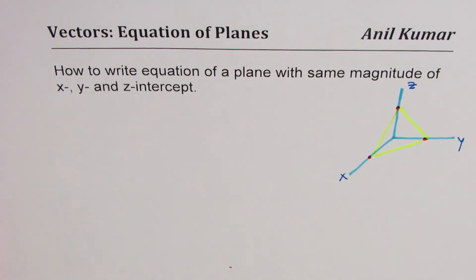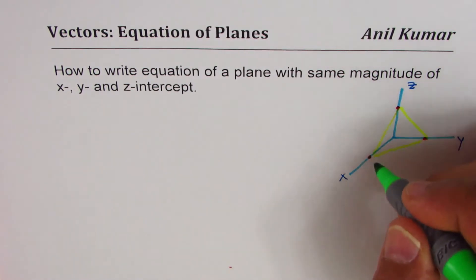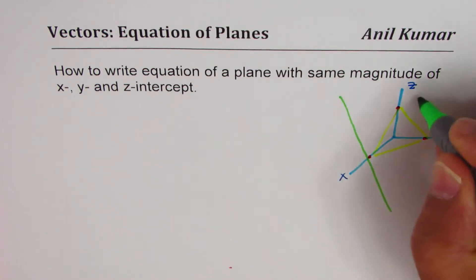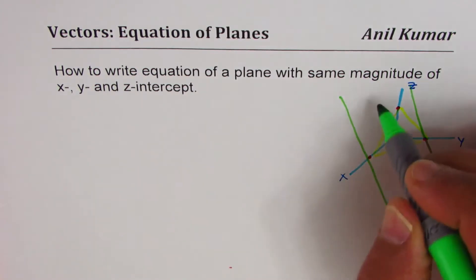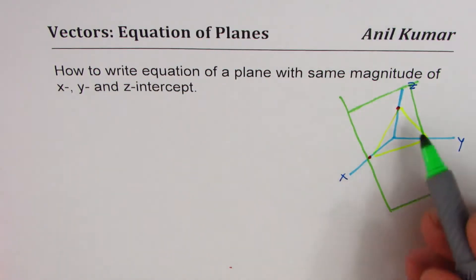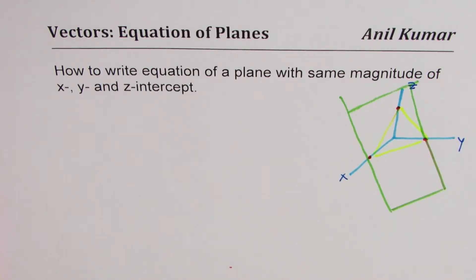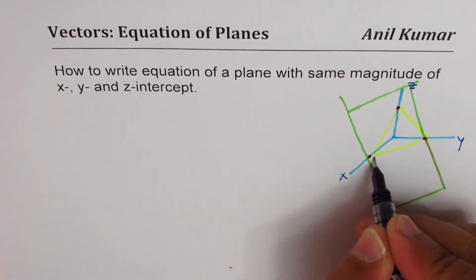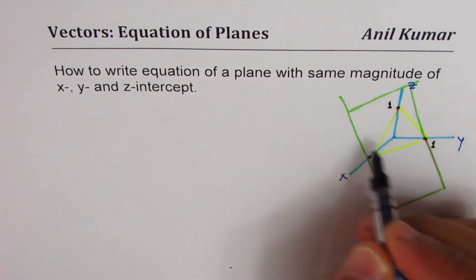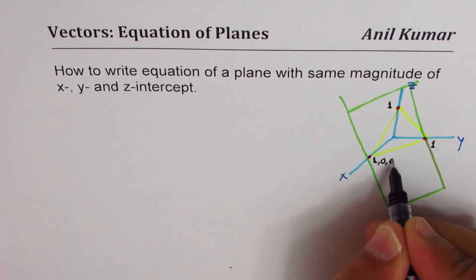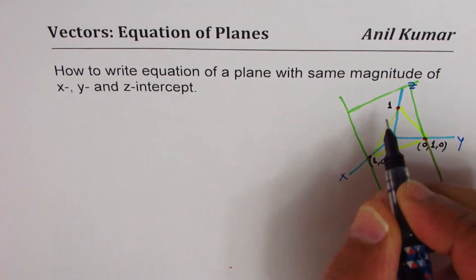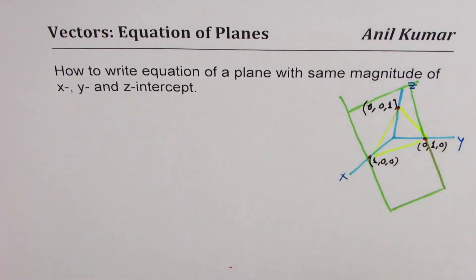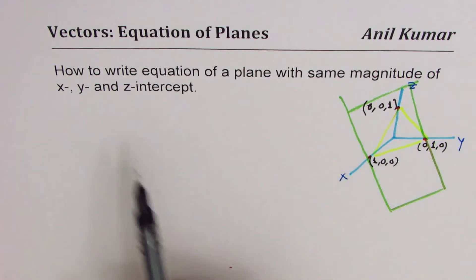This plane can be extended in all directions. These are the three points on the plane. For simplicity we are taking these points one unit away, so when I write 'one' it really means (1, 0, 0), then (0, 1, 0), and (0, 0, 1). So these are the three x, y, and z intercepts, and they are the same distance away.